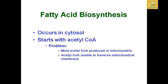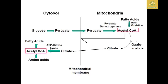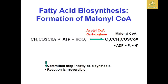Fatty acid biosynthesis mainly occurs in the cytosol and starts with acetyl-CoA. However, a major problem is that most acetyl-CoA is produced in the mitochondria, and acetyl-CoA cannot cross the mitochondrial membrane. Therefore, a citrate transport compound is used to transfer it. Citrate helps transfer the acetyl group across the membrane, and glycolysis provides acetyl-CoA in this process.